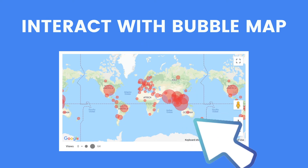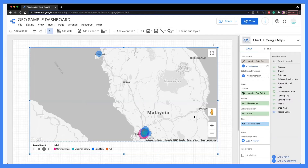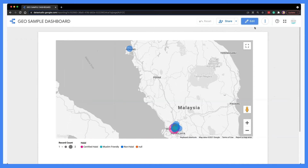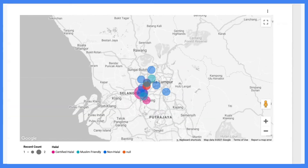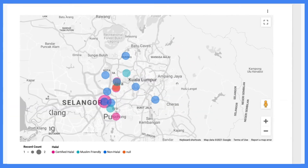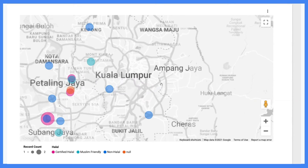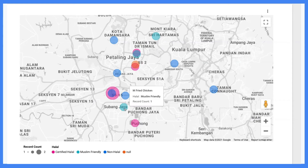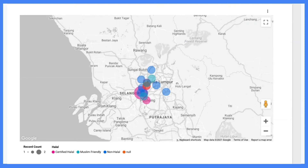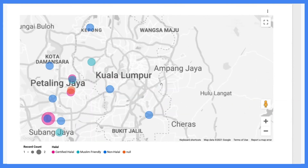Now we will learn how you can interact with this map. To interact with the map, you will need to switch to view mode. If you want to zoom into an area, you can click on the plus button, or you can double-click on certain areas to zoom in further. You can also move the map by simply dragging it up and down or left and right — this action is also known as panning. If you wish to know more about a certain location, simply hover on the bubble and you'll get to see the extra information you have added.